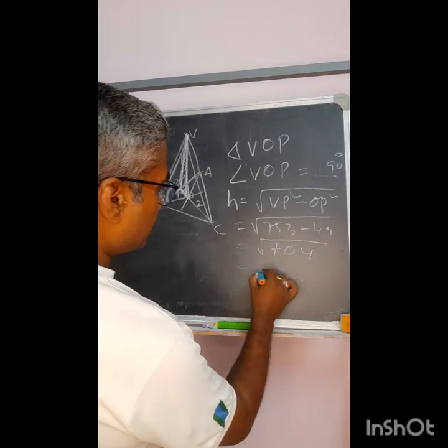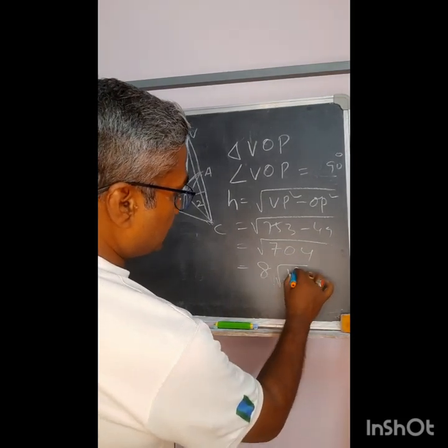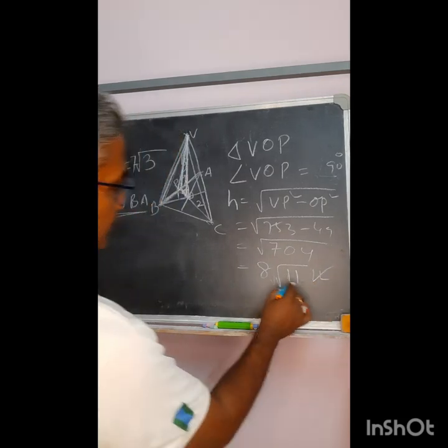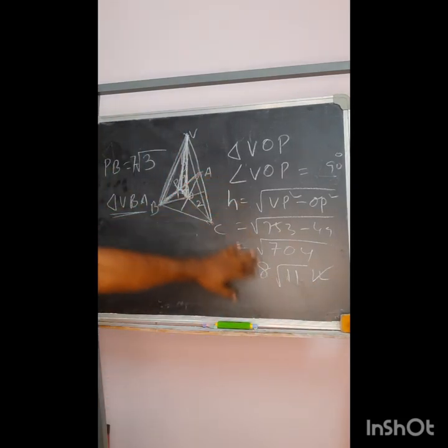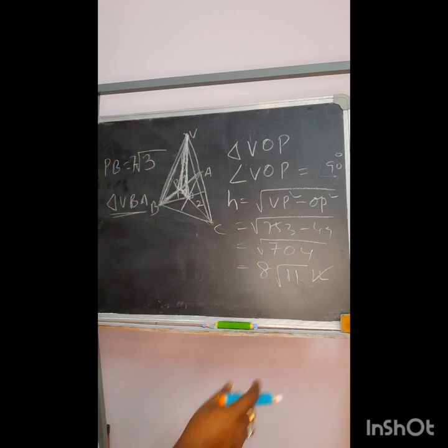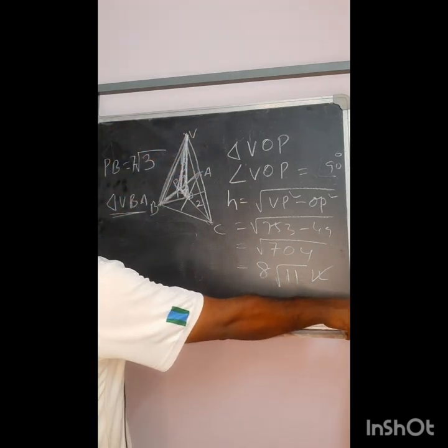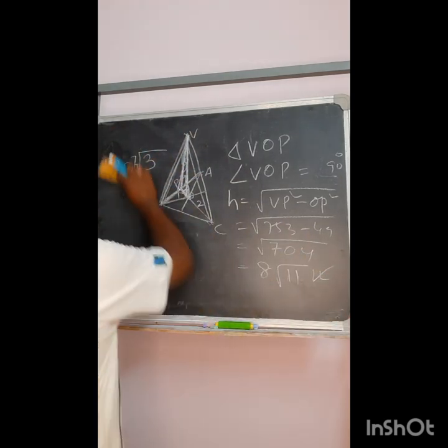So if I further calculate it will give you something like this one 8 root 11. This is the value of this, the height of the pyramid which is to be calculated. This is your answer.